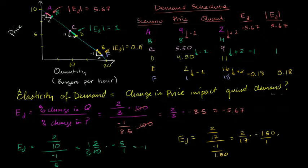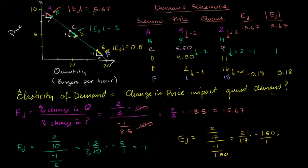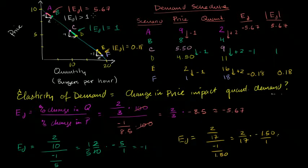It all comes from the fact that quantities are low here — if you move 2 units on a low base, you get a large percentage change in quantity — and prices are relatively high, so a change of $1 isn't that large a percentage. When the absolute value of your elasticity of demand is greater than 1, this point on the curve is called elastic, or generally elastic. You get nice percentage movements in quantity for a given percentage change in price.